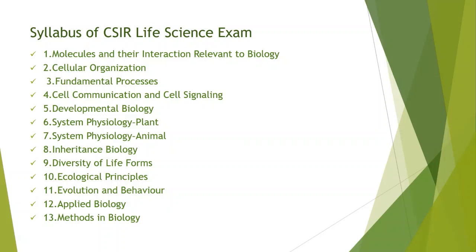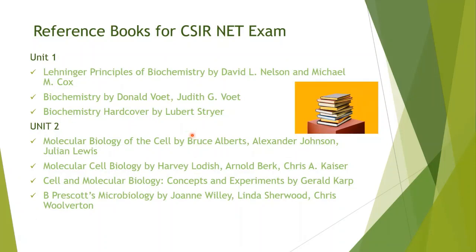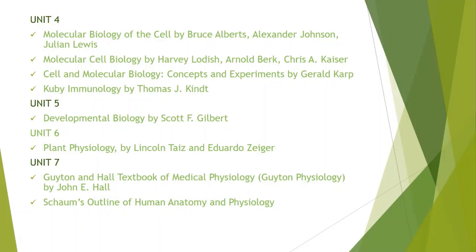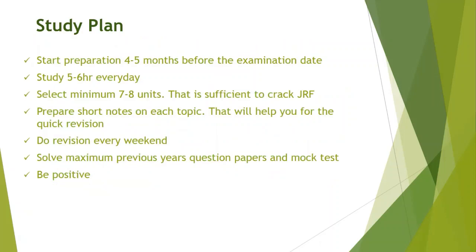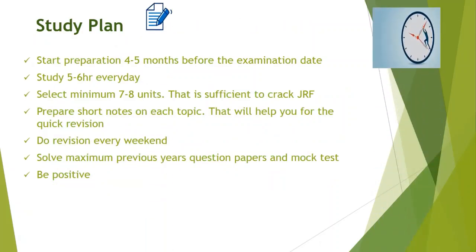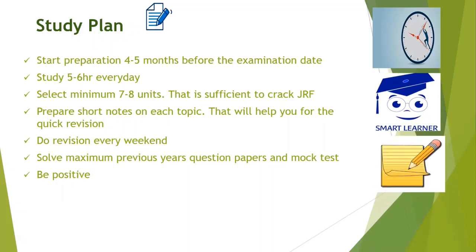There are some reference books for CSIR NET Life Science examination listed unit-wise — you can pause the video and note them down. The next important thing is the study plan. Start preparation 4 to 5 months before the examination date. Study 5 to 6 hours every day. Select minimum 7 to 8 units, which is sufficient to crack JRF, but study those units thoroughly. Prepare short notes on each topic for quick revision. Do revision every weekend. Solve maximum previous year question papers and mock tests — search on Google for previous year papers and mock test links.